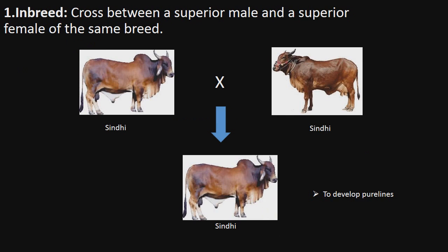Inbreeding is a cross between a superior male and a superior female of the same breed, in order to produce pure lines of the respective breed.